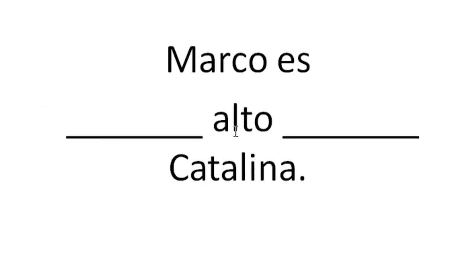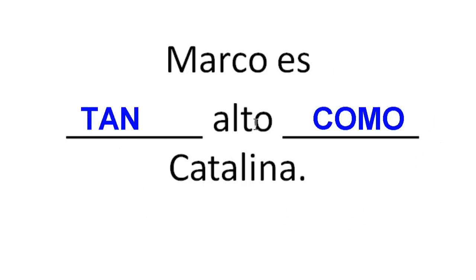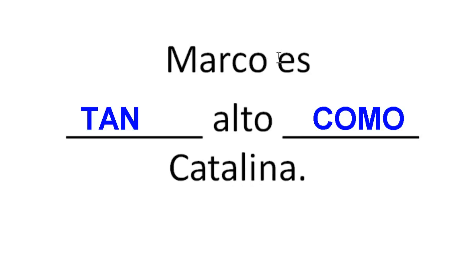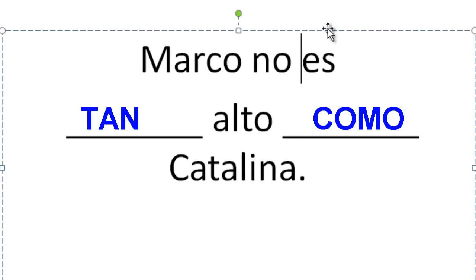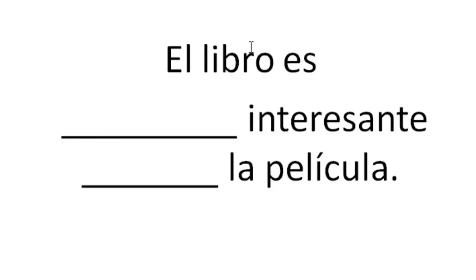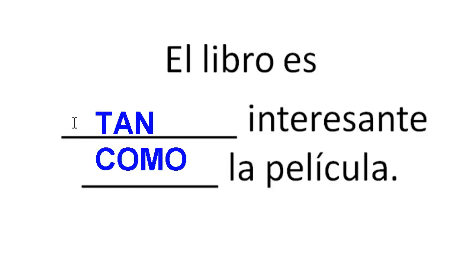Marcos es blank alto blank Catalina — Marcos is as tall as Catalina. Marcos es tan alto como Catalina. See the pattern: tan grande como, tan alto como. If we want to say he is not as tall as Catalina, no es tan alto como Catalina. Next: el libro es blank interesante blank la película — the book is as interesting as the movie. El libro es tan interesante como la película. So that's tan...como.